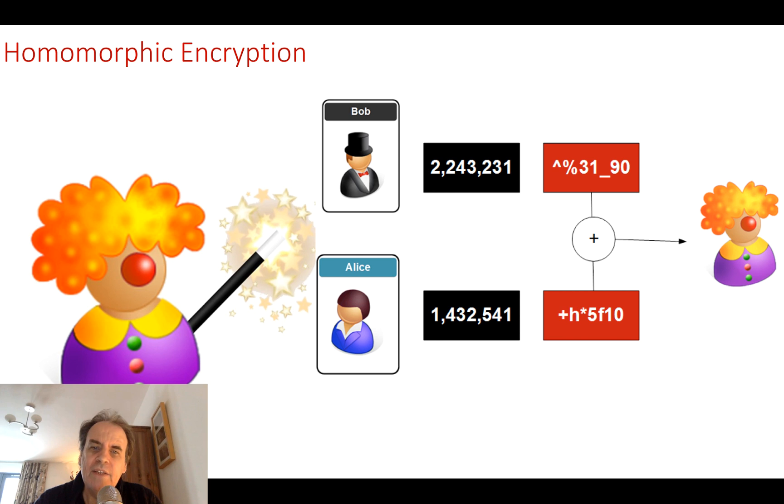In this case, Bob and Alice might get Eve to process some data for them. Bob will use his public key to encrypt his value and Alice will use the same. Then Bob and Alice can give the encrypted values to Eve and Eve can operate on them. Eve can then do some sort of operation such as finding out which is the largest value or what's the total value and then give the encrypted value result back to Bob and Alice.